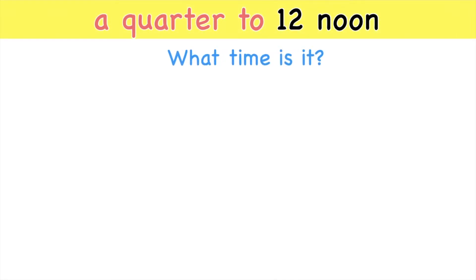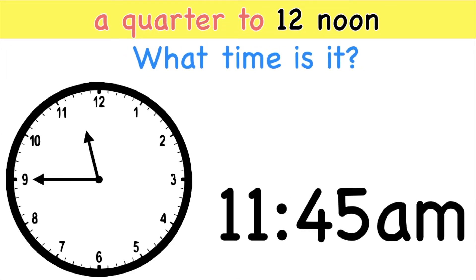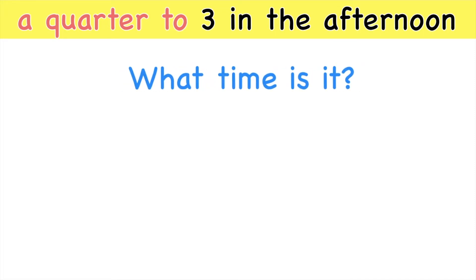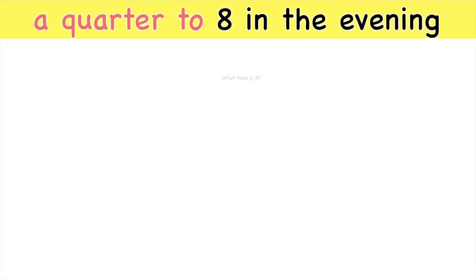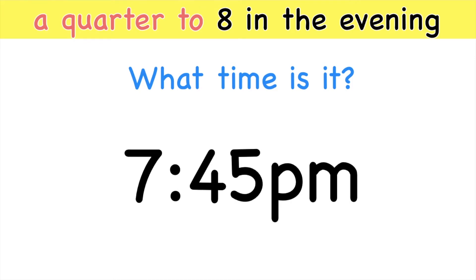How about if you have this? It's a quarter to 12 noon. What time is it? This is your analog clock, this is 12 noon. Let's count 15 minutes backwards: 5, 10, 15. It's 11:45 a.m. How about a quarter to 3 in the afternoon? Good job, children! It's 2:45 p.m. How about a quarter to 8 in the evening? Fantastic! It's 7:45 p.m.